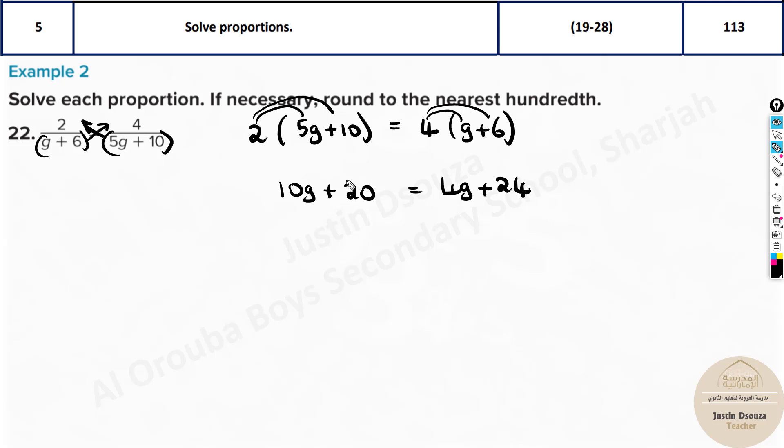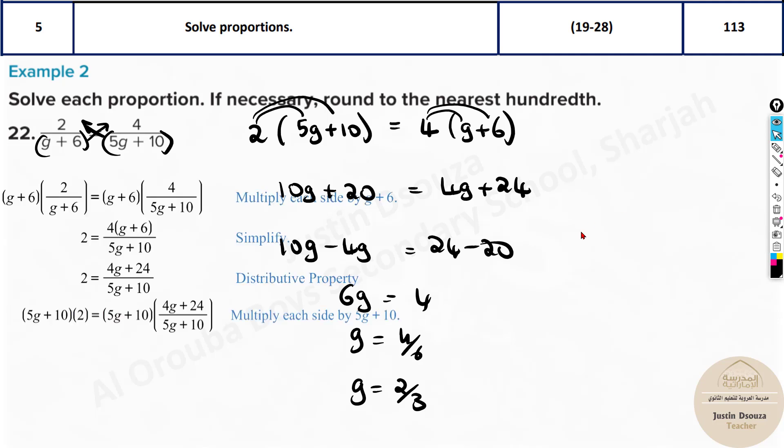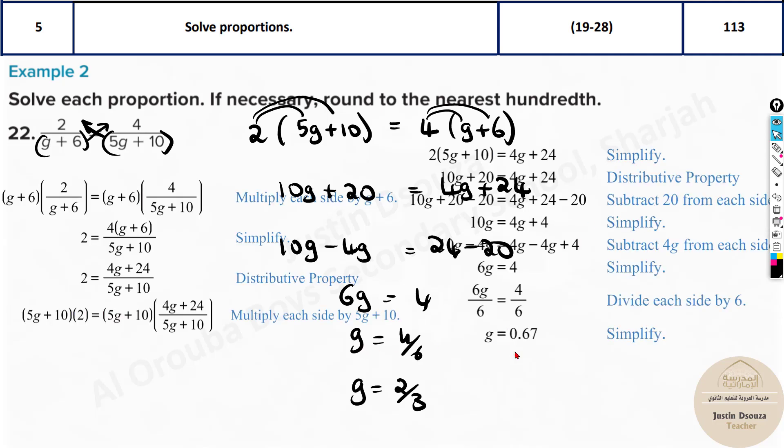Now we have done this before. 10g is bigger, leave it over there. 4g is small, take it to the other side, minus 4g. Numbers all at one place: 24 minus 20. It will be 6g equals 4. g equals 4 by 6, or g equals 2 by 3. That will be 0.666, so 0.67 to simplify it. It will just repeat 0.66666 and keeps on going, so we just write 67. This is how we do it. If you want, you can put this in the calculator and directly get this answer.